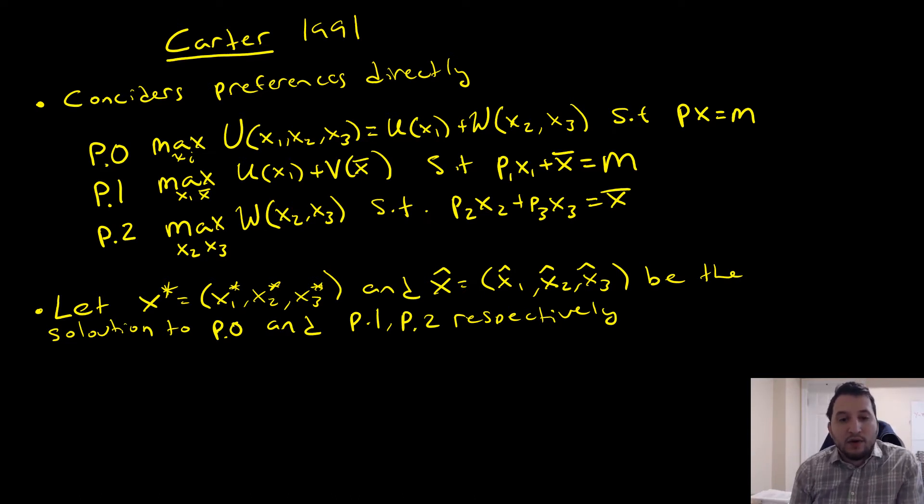So the way we prove this is by letting X star be equal to X1, X2 and X3 and X hat be equal to X1 hat, X2 hat, X3 hat. And those are going to be the solution to P0, that being with reference to our X star and P1 and P2 respectively, this being with reference to our X hat.